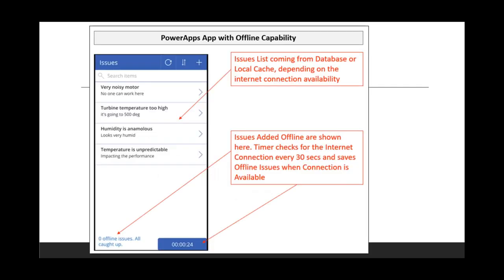Here's an example: if you have a spotty connection and you're trying to fill out a form, you can be updating your data and a timer checks the internet connection every 30 seconds, saving it until it's available. It has this idea of a local cache. That should be helpful for spotty or low-bandwidth connections — for example, a driver taking photos of a delivery who can synchronize when back in range. You can build those kinds of mobile apps with Power Apps now.